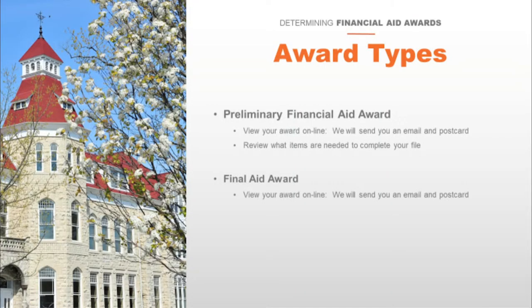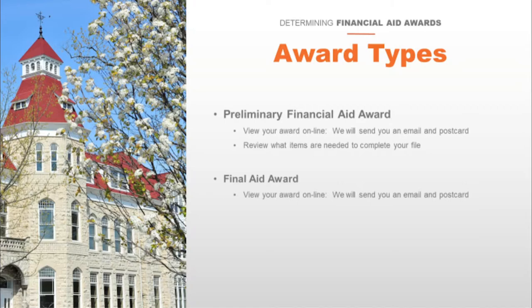There are two types of awards for accepted students: preliminary and final. You can view your award online by logging into your MyCarrollU student portal. We will send you an email and postcard when your award is ready to view. Once you are in your student portal, click the Admission tab and then click Financial Aid.